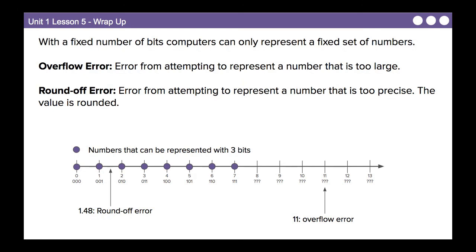So with a fixed number of bits, computers can only represent a fixed set of numbers. If we had unlimited bits, we could represent unlimited numbers. But with a fixed number of storage, we can only represent a fixed set of numbers. So two terms today that we ran into, jot these down in your journal. An overflow error. That's an error from attempting to represent a number that is too large. That is what happened when we worked with the binary odometer, and we ran the settings up to max settings and then hit start. We had an overflow error. There wasn't enough space to store the next piece of information. So we had an overflow. And then a roundoff error. Those are the errors that we were exploring with our Flippy-Doo Pros. That's an error from attempting to represent a number that is too precise. So the value is rounded. So when we had like 0.17, and we had to decide to round up to 0.25, that is a roundoff error.